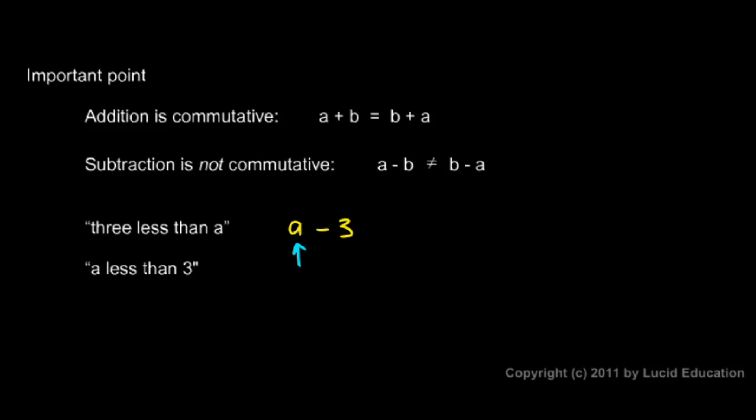We have A as some number, and then we're subtracting three from it so that we have three less. And that gives us three less than A. So this is the proper mathematical translation of this.